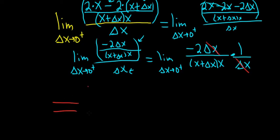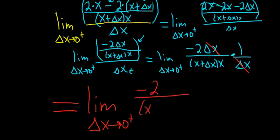So this is equal to the limit as delta x approaches 0 from the right of negative 2 over x plus delta x times x. And at this point, we're good. We can finally take delta x equal to 0. We can plug it in.